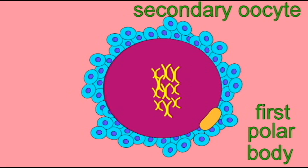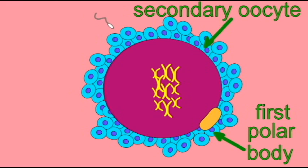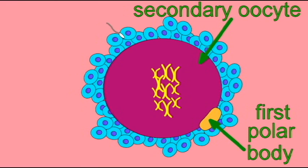At ovulation, a secondary oocyte is released from the ovary. This cell is not yet an ovum or egg because it has not yet completed its second meiotic division. It is in metaphase of meiosis II.